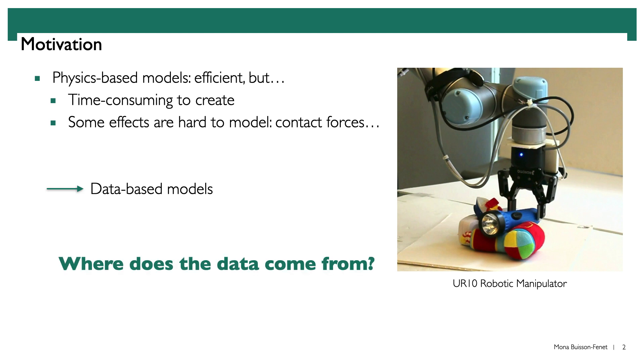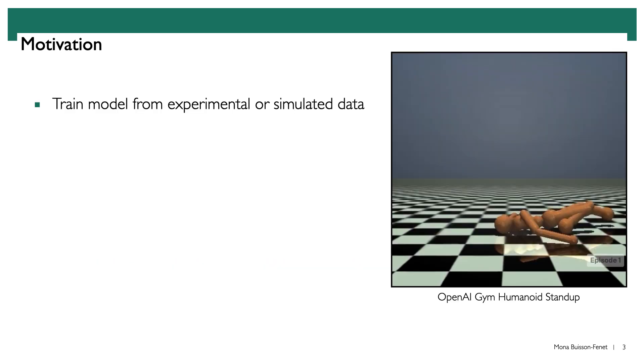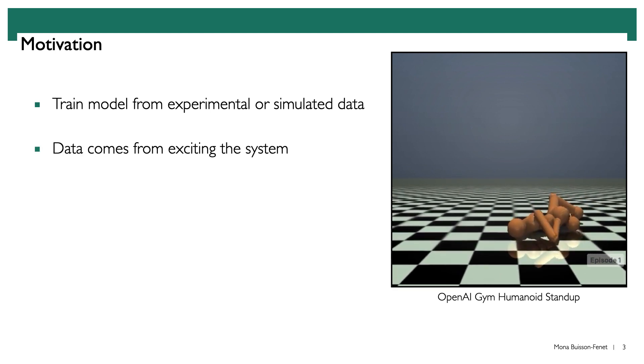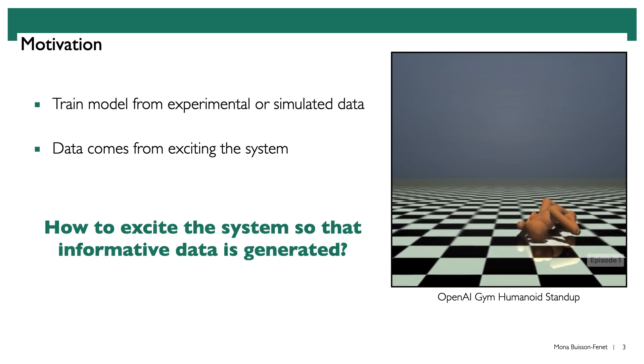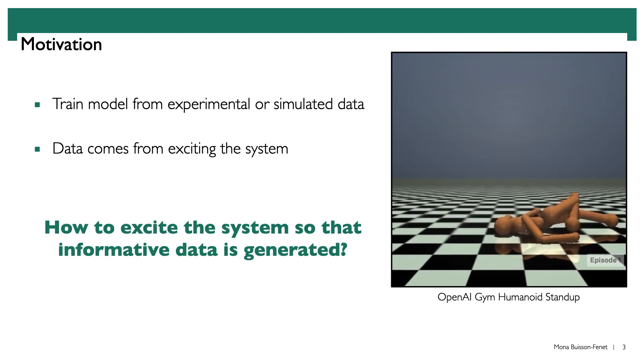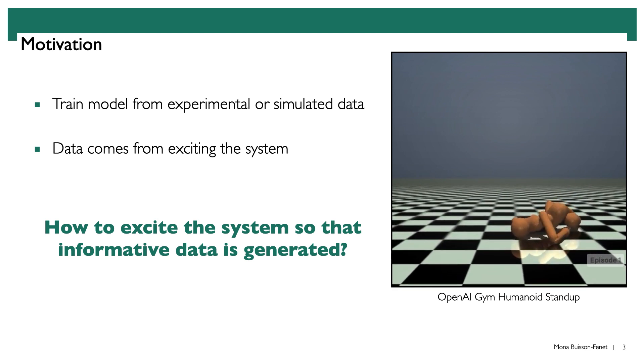But how do we get this data? We usually train a model from experimental or simulation data that is obtained by exciting the system that we are trying to learn in some way. But how should we excite the system so that the data that is generated is actually informative?